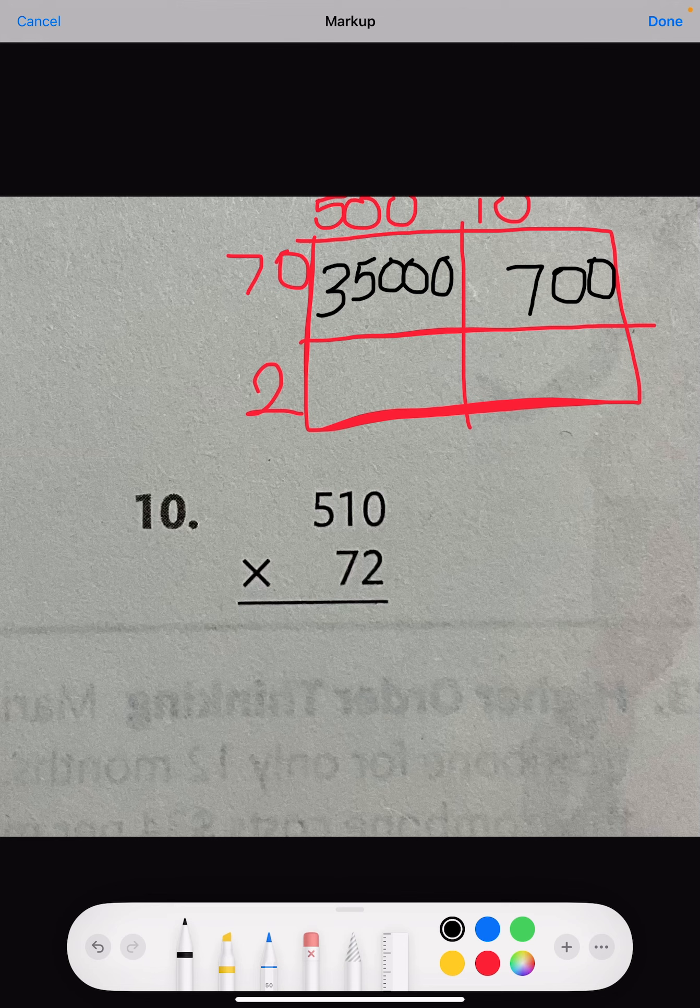In our bottom box, we have 500 times 2. 500 times 2 is 1,000, but let's do the math. We're going to put the two zeros in 500, and 5 times 2, which is 10. Next, we're going to say what 2 times 10 is, and 2 times 10 is 20.